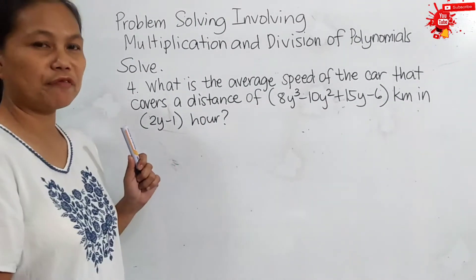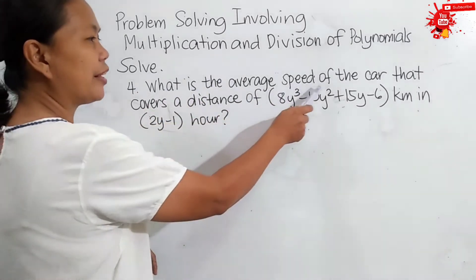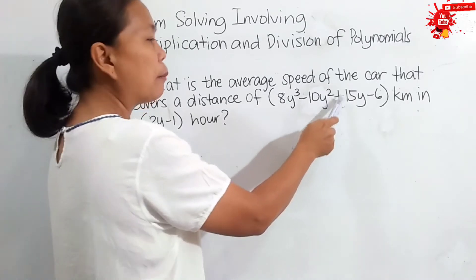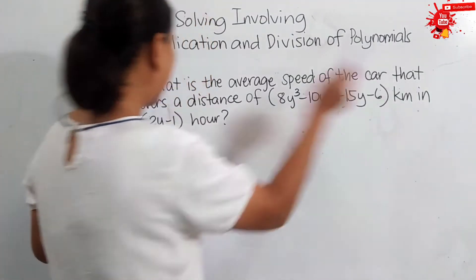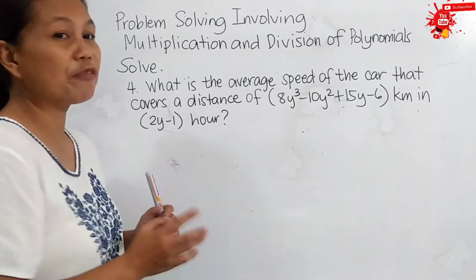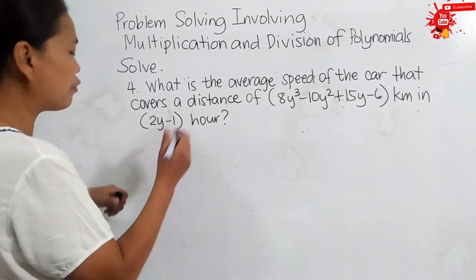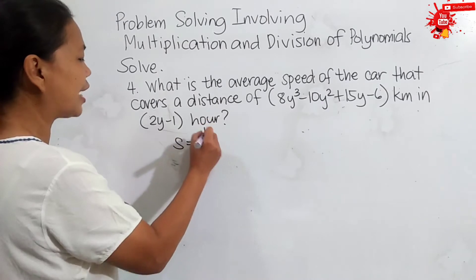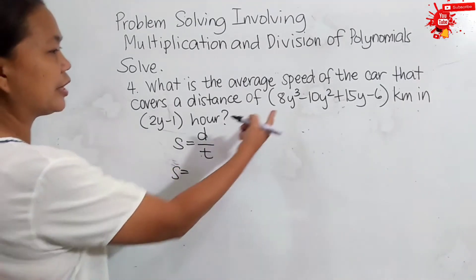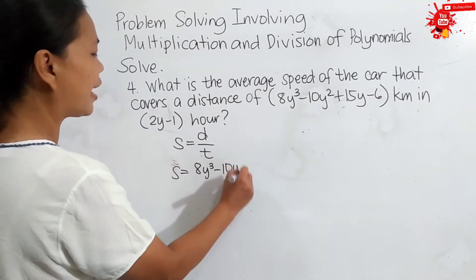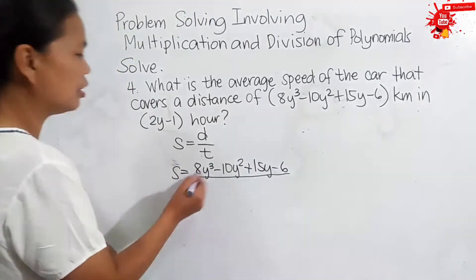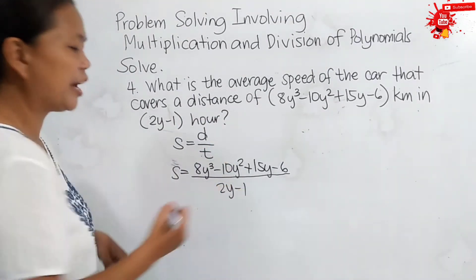Let us discuss problem number 4. We have here: what is the average speed of a car that covers a distance of 8y cubed minus 10y squared plus 15y minus 6 kilometers in 2y minus 1 hours? The problem is asking for the average speed. The formula we are going to use is: speed is equal to distance divided by time. Let us substitute.